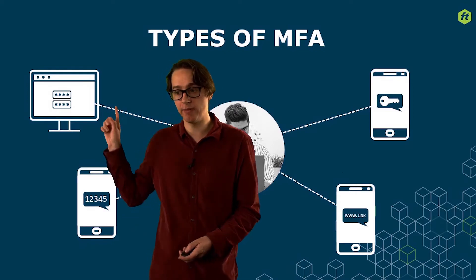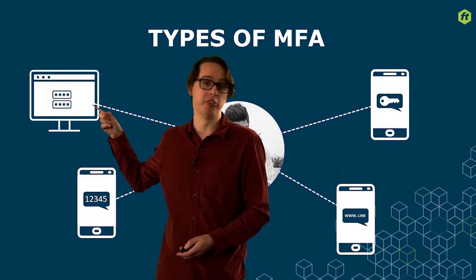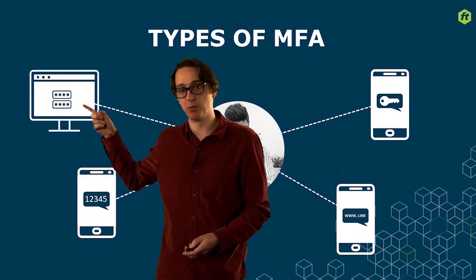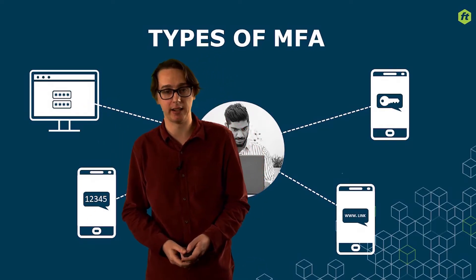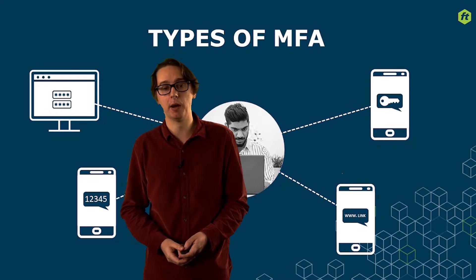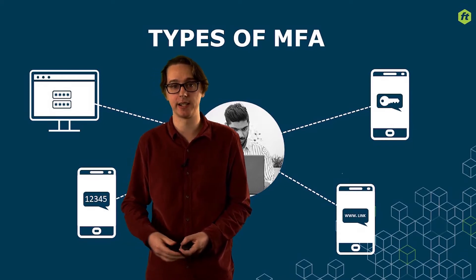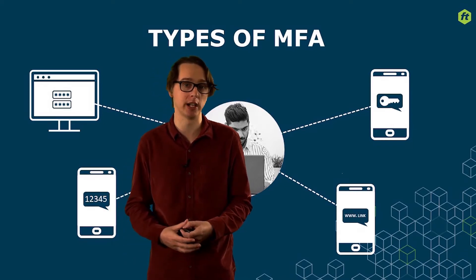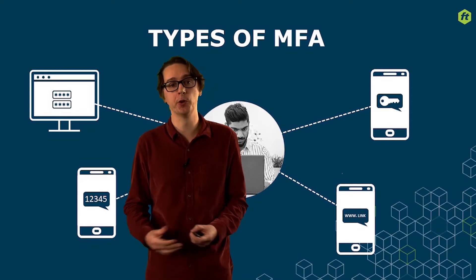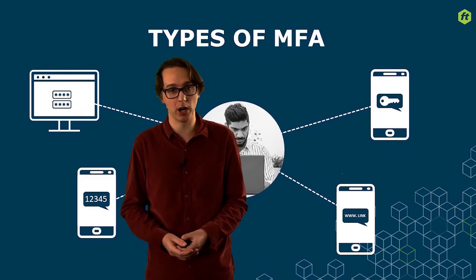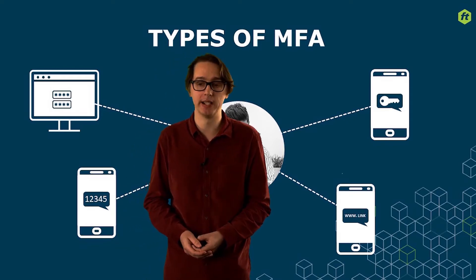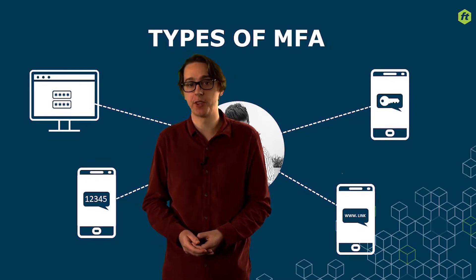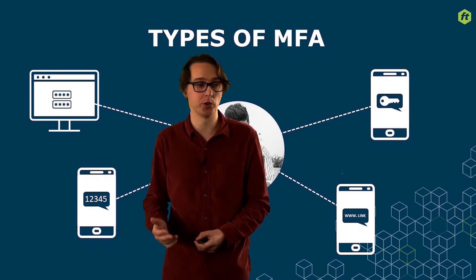The first step is you put in your username and password — that was the most common way of logging into your account. What multi-factor authentication does is it allows that second layer to basically secure your identity further through Microsoft. The ways that can be done is through the authenticator app, through a text, or through a call.